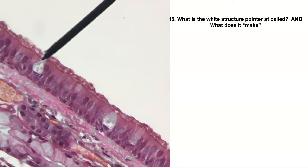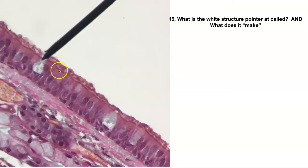Number fifteen — pointer pointing to a goblet cell. What do goblet cells make? They make mucus. Goblet cells are found in your airways and in your GI tract; depending on where they are determines the function of that mucus. This is pseudostratified ciliated columnar — probably in the trachea. The mucus is put on the surface of these cells, and the cilia trap air particles so you don't take them deep into your lungs.